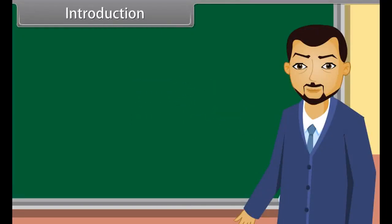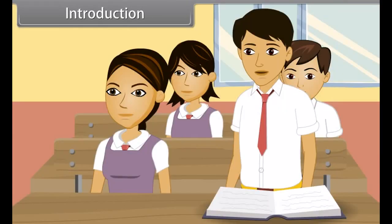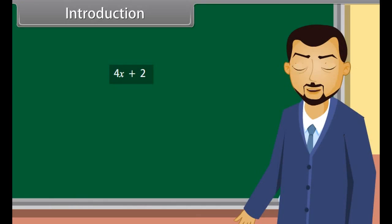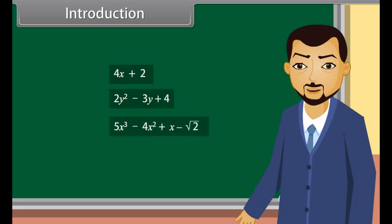Students, look at this polynomial. What can you say about this? This is a polynomial in the variable x of degree 1. You are right. Similarly, 2y squared minus 3y plus 4 is a polynomial in the variable y of degree 2, and 5x cubed minus 4x squared plus x minus square root 2 is a polynomial in the variable x of degree 3.